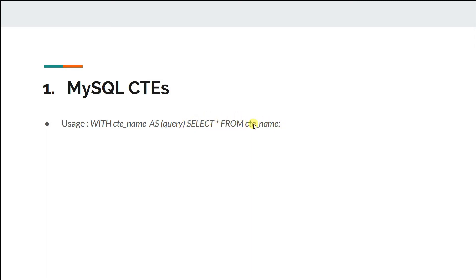For example, a normal query is just SELECT * FROM a table. In derived tables, instead of the table name there are parentheses with a subquery inside. In CTEs, that part is moved to the front: you write WITH cte_name AS, then write the subquery, and then that CTE name can be used anywhere within the query — such as SELECT * FROM cte_name JOIN other_cte.